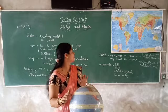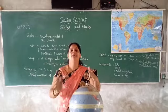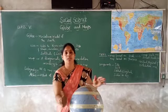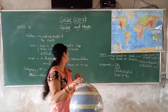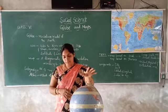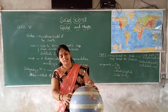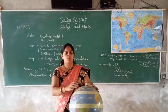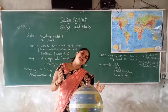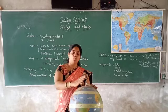Apart from that, latitude and longitude are mentioned here. Then in the direction — East, West, South, and North — North, South, East, and West also, it is located on the globe. These are the uses of the globe.